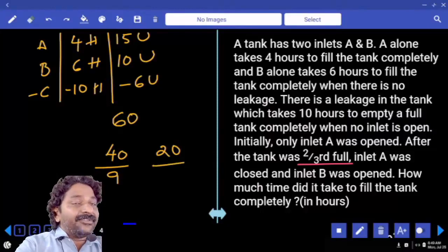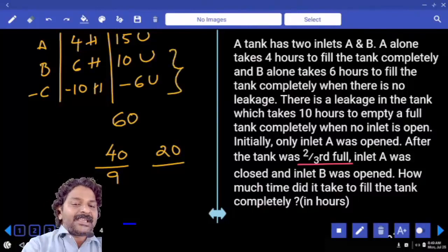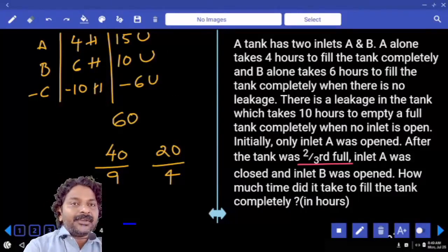Now to fill the remaining 20 units, which pipes are open? B and C. When you have B and C, both together can fill only 4 units per hour.